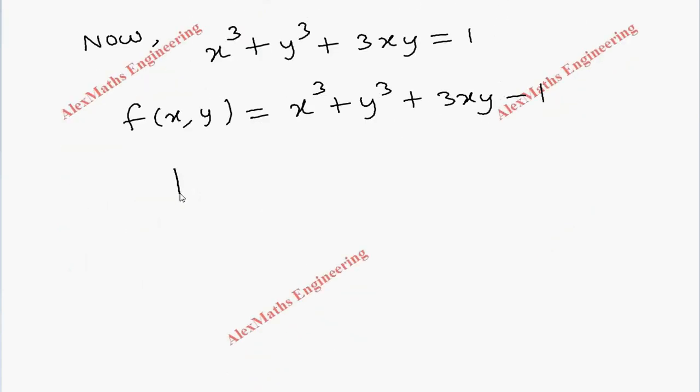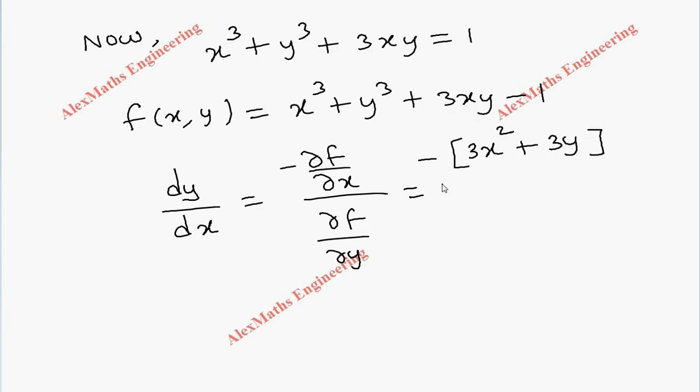So then I want to find dy by dx by formula minus partial f by partial x divided by partial f by partial y. So the numerator minus differentiation with respect to x, that is a partial derivative with respect to x. First term 3x square, second term purely constant and third term 3y is constant and derivative of x is 1 and the last term derivative is 0.